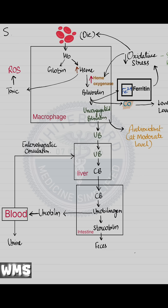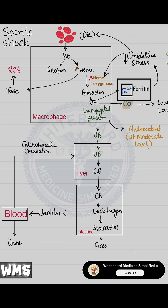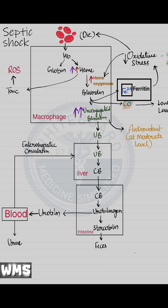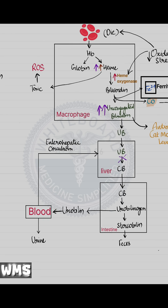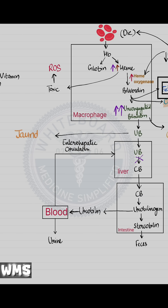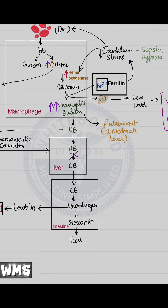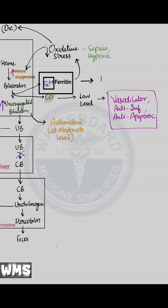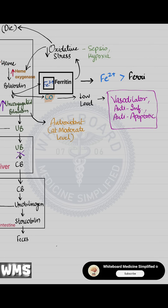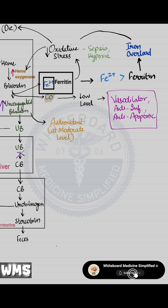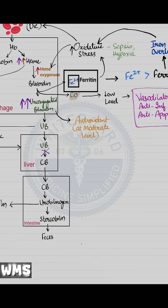However, in severe stress like septic shock, this protective mechanism can overshoot. Excessive heme breakdown leads to high bilirubin levels, overwhelming the liver and causing jaundice of sepsis. Also, excess iron release may exceed ferritin's capacity, causing iron overload and further oxidative damage.